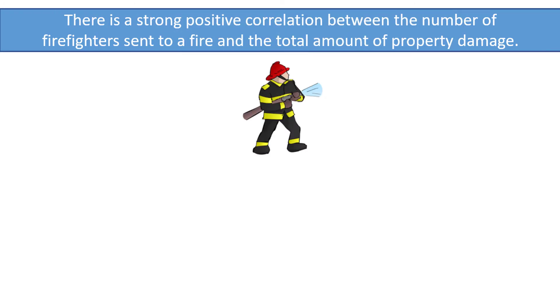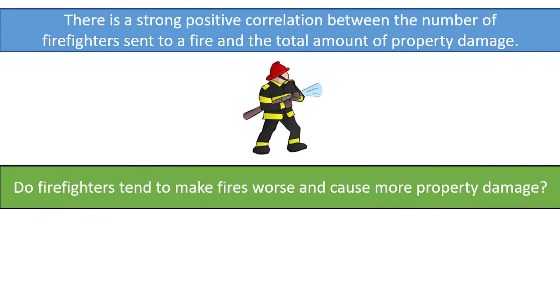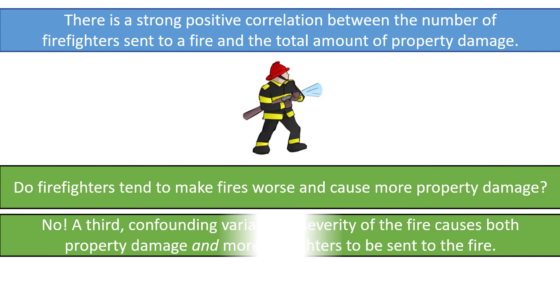The best way to see why correlation does not imply causation is to look at examples of highly correlated data that are clearly not causally related. One of my favorites is the strong positive correlation between the number of firefighters sent to a fire and the total amount of resulting property damage. Fires with high property damage tend to have a lot of firemen sent to them. Does that mean that firefighters tend to make fires worse and cause more property damage? No! Of course not!